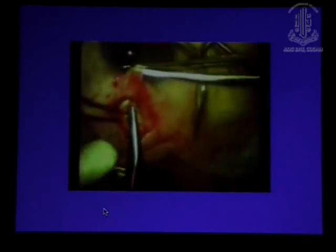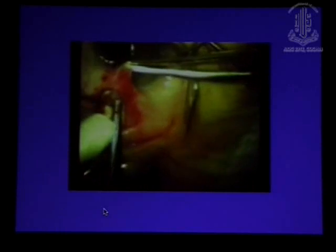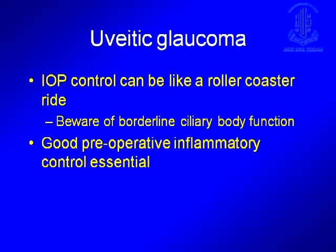One thing you must remember in these eyes is that they always tend to have a lot of encapsulation post-operatively. So once the hypotony phase in the first couple of weeks is over, make sure that you give them an aqueous suppressant for a few weeks after surgery. Uveitic glaucoma IOP control can be like a roller coaster ride. Always keep in mind borderline ciliary body function before you decide to operate, and make sure that you have good preoperative inflammatory control before you get into the eye.